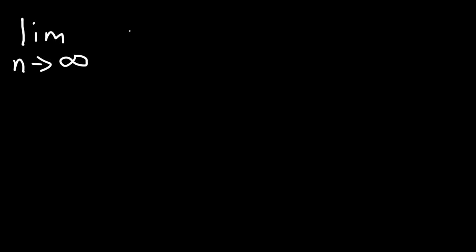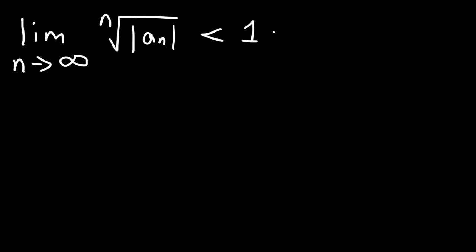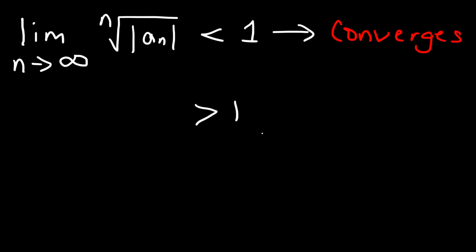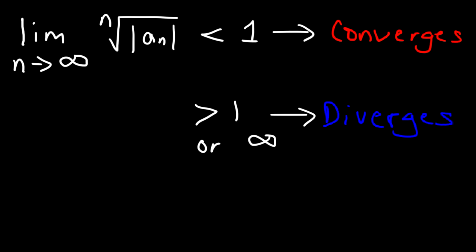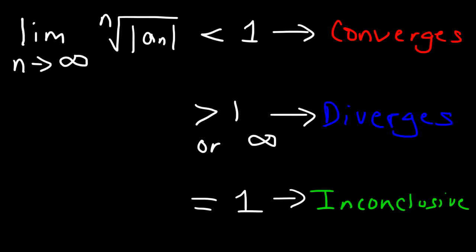In this video, we're going to talk about the root test. We take the limit as n goes to infinity of the nth root of the absolute value of the sequence a sub n. If the limit is less than 1, the series converges. If the limit is greater than 1, or if it goes to infinity, the series diverges. Finally, if the limit is equal to 1, the results are inconclusive.